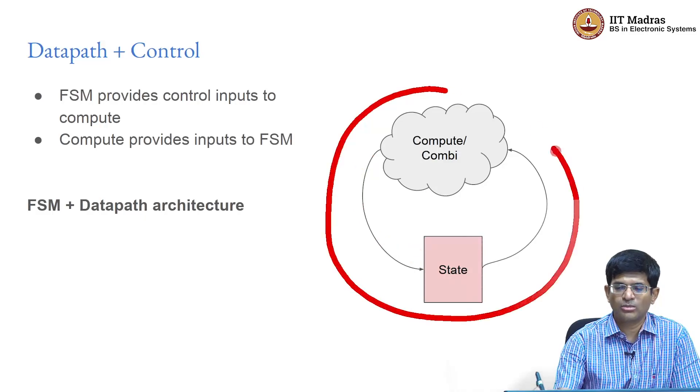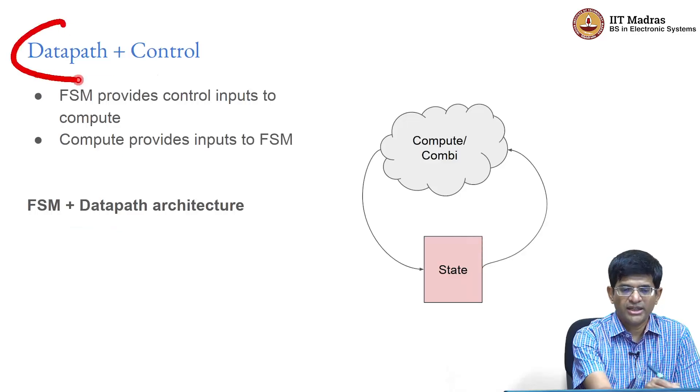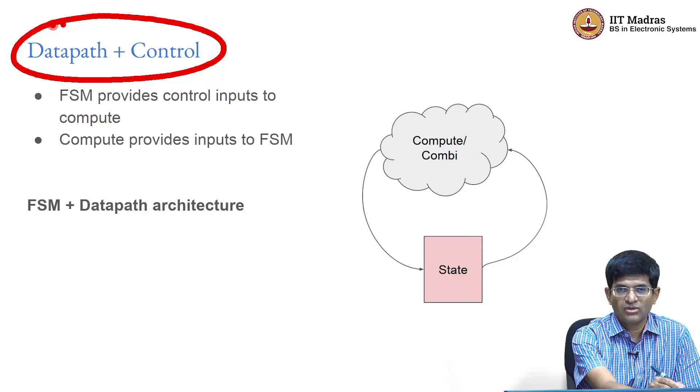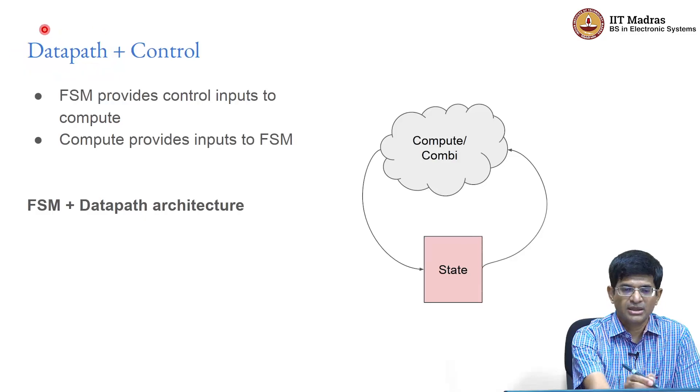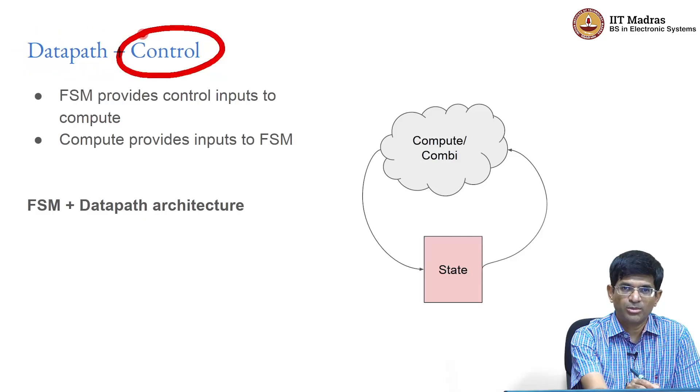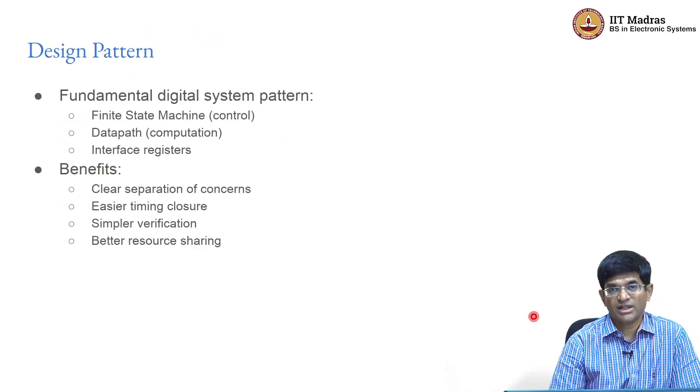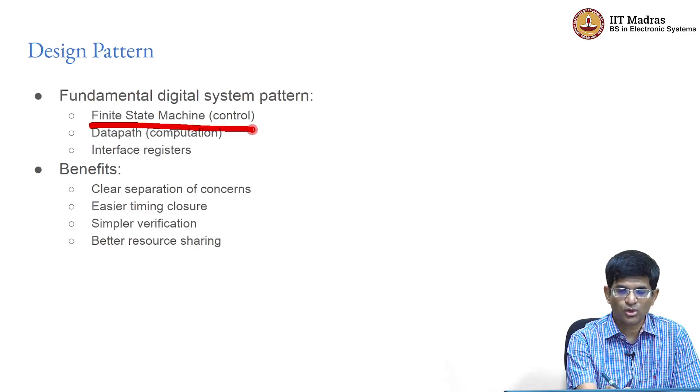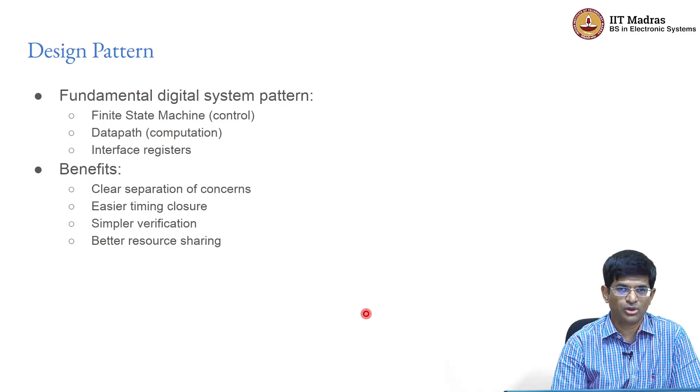This is a very generic form of digital system architecture and we refer to this as the FSM plus data path architecture. The alternate name is the data path plus control, where the data path performs input to output transformations. The control logic tells the data path when to operate, which inputs to operate upon and also detects when the output has been computed and can be moved into another location or output from the system.